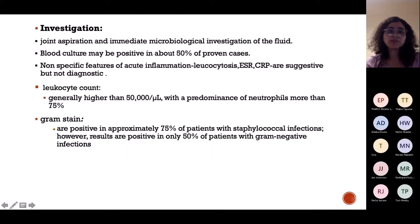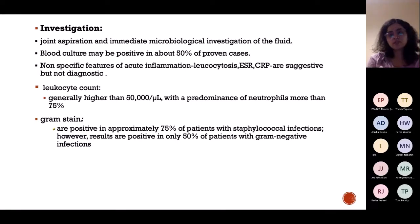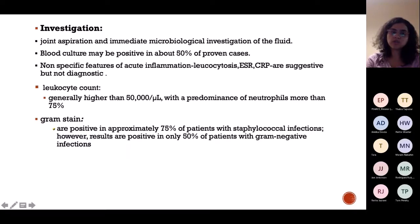Investigations include joint aspiration and immediate microbiology. We aspirate from the joint and send it for cultures, which would be positive. We also check inflammatory markers in the blood, which will be raised, along with raised white cell counts because bacteria increase leukocytes. Gram stain can also be done, but usually blood culture and joint aspiration are sufficient.